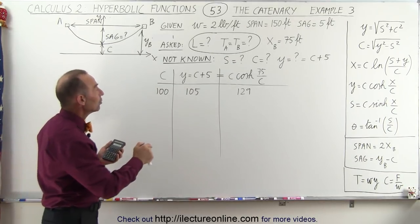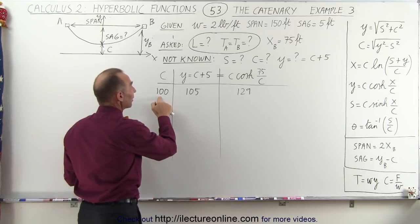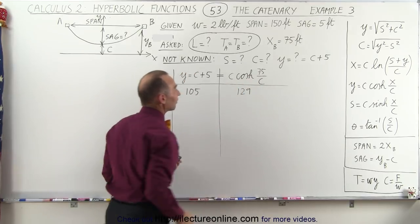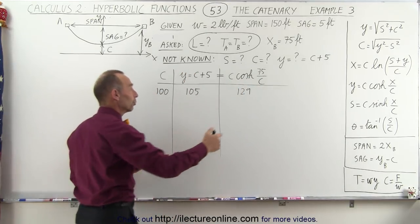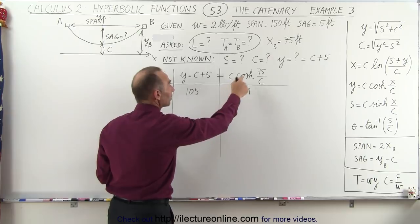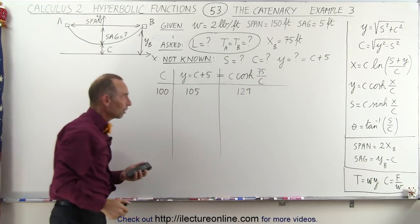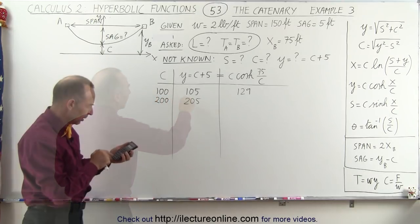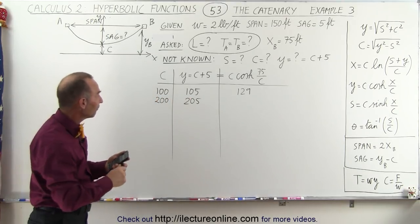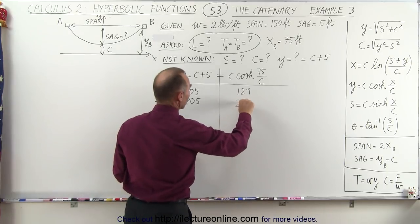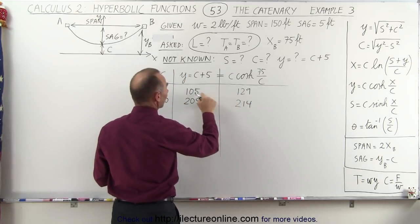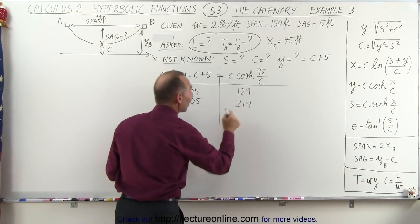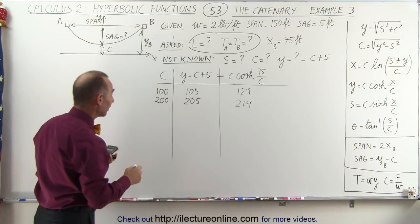But to get closer what we need to do here is pick a larger value for c because a larger value for c will make this a smaller fraction, will reduce the size of the hyperbolic cosine. Of course we're multiplying it by a bigger number here but essentially that should drive down this expression. So let's try that. Let's try 200 and see what we get. And we get 214. We were 24 away from what we needed. Now we're only 9 away from what we needed. So we're getting closer. We're on the right track.